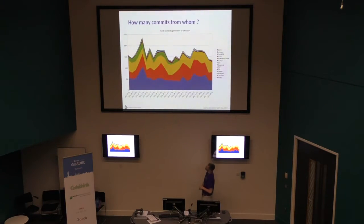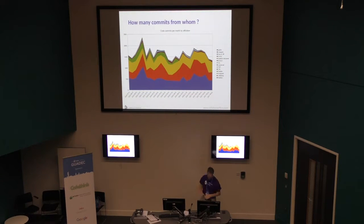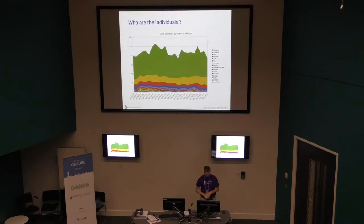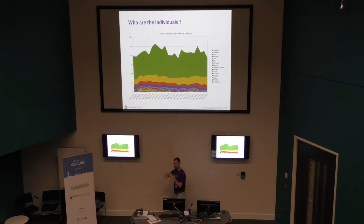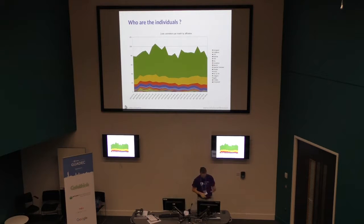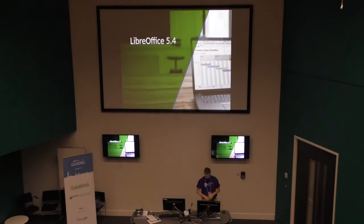Looking at contributor stats: basically Red Hat, Collabora, and volunteers in terms of number of patches. By committer count, there's just a huge number of cool people doing stuff — small patches, improvements, clean-ups, fixes. The big green block is just volunteers getting involved in the project, which is cool.